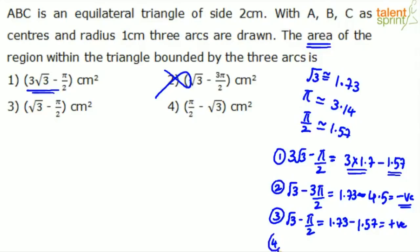But option 4, π/2 - √3, this will become negative. It is negative of the third option. π/2 minus √3 is minus of √3 minus π/2. This is negative. Can the area be negative? No. Option 4 is also eliminated.